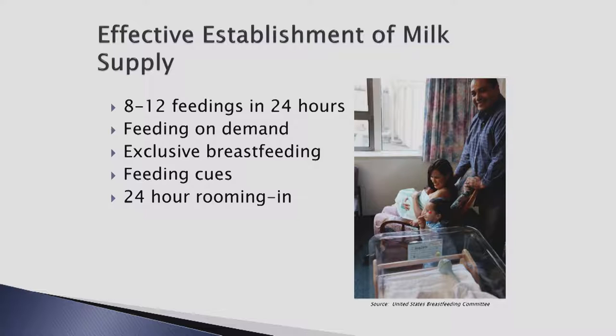Each baby should determine frequency and duration of feedings, as long as they are feeding at least 8 to 12 times in 24 hours. Newborns can feed on one breast only per session, both breasts per session, or both breasts then going back to the first toward the end of each feeding session. All of these variations are common and normal and help to establish a good milk supply.